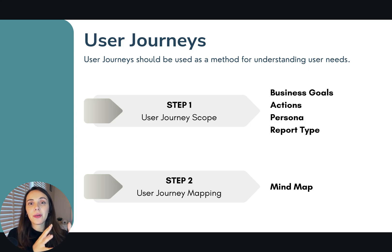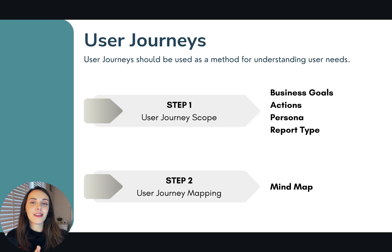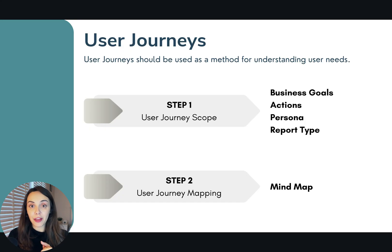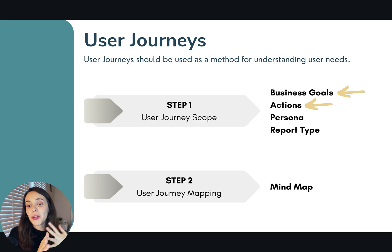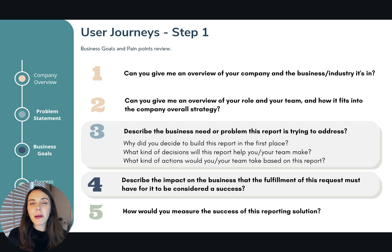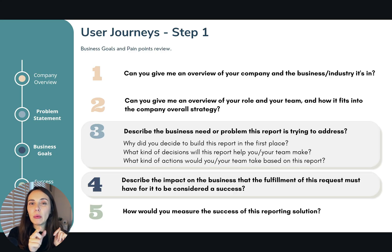So where do we get those business goals, actions, personas, and report types for our user journey scope? We do have all this information available already through the first stage of the requirements gathering process. Let's first analyze the business goals and the actions — do you remember when we were discussing how to understand business goals and pain points a couple of modules before?